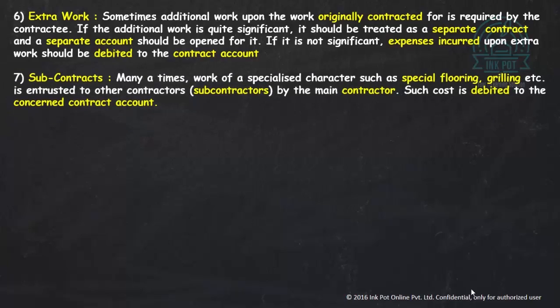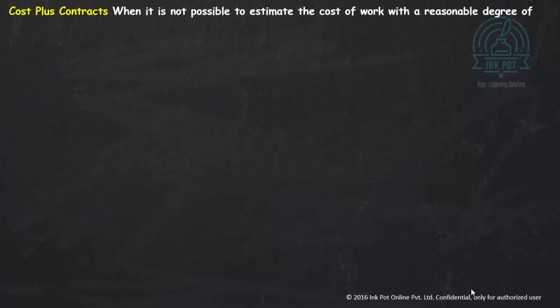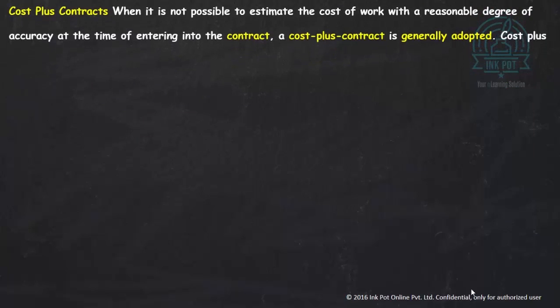Subcontracts are contracts given by the contractor to someone else. For example, if a contractor is constructing a building, he may give subcontracts for flooring, grilling, etc. to a subcontractor. In such cases, the cost is debited to the concerned contract account.